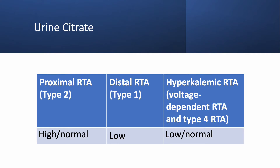Urine citrate is an important test. It is low in distal RTA, normal or even elevated in proximal RTA, and variable in hyperkalemic RTA — it can be a little low or normal. Low urine citrate in distal RTA is one of the reasons why those patients develop kidney stones, as hypocitraturia is associated with nephrolithiasis. If you are suspecting distal RTA, it's a good idea to do a 24-hour urine citrate — if it is low, that may be your diagnosis.